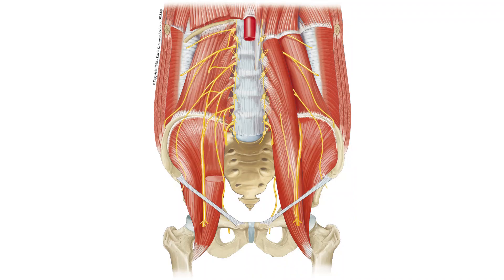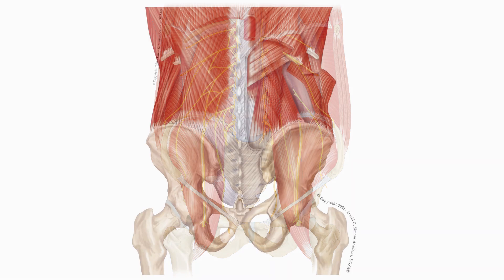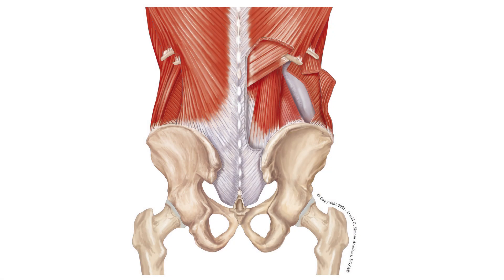On the lateral side the quadratus lumborum is covered by the abdominal obliques and the transversus abdominis muscle. On the dorsal side the QL is covered by the superficial layer of the thoracolumbar fascia, the latissimus dorsi muscle and the iliocostalis muscle.